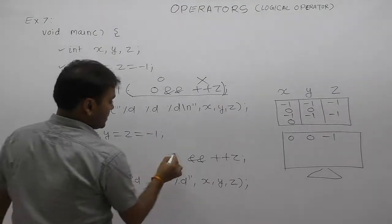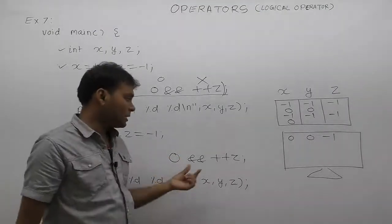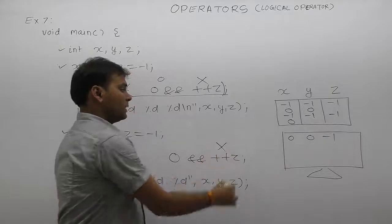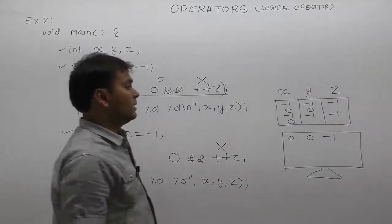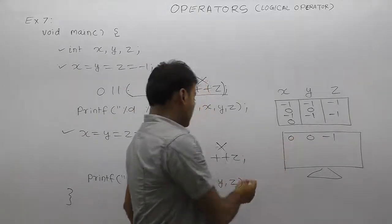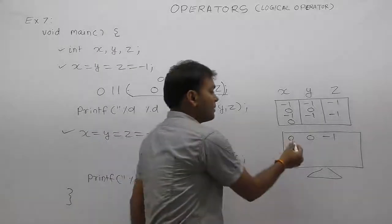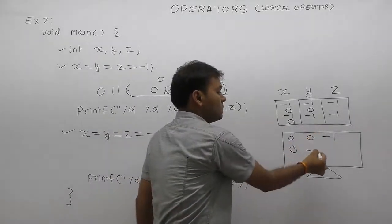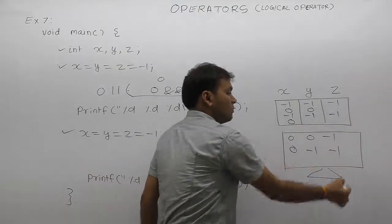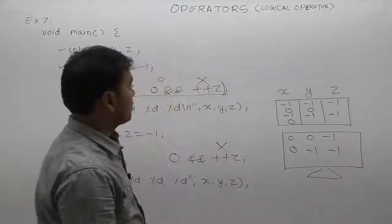Therefore z is not incremented. Then this will be the result of operation. X, y, z value: x value is 0, value of y is minus one, value of z is also minus one. This is the end of that example.